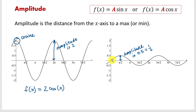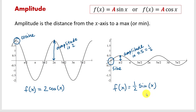How about the second one? We can see that for the second graph the y-intercept is at the origin (0, 0). That's how we identify the sine function. So the function will be f(x) equals one half sine of x.